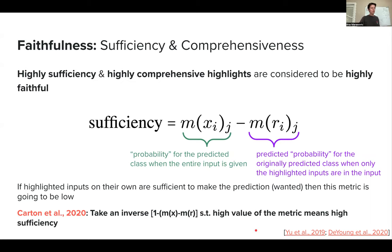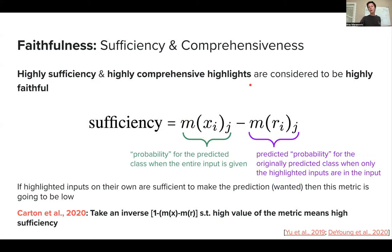With this definition, having very low sufficiency is what we want — but it's strange to say we want low sufficiency. So Carton et al. (2020) suggested taking the inverse of this, such that a high value of this metric means high sufficiency. That makes the whole presentation easier: we can now say high sufficiency and high comprehensiveness give us highly faithful highlights.